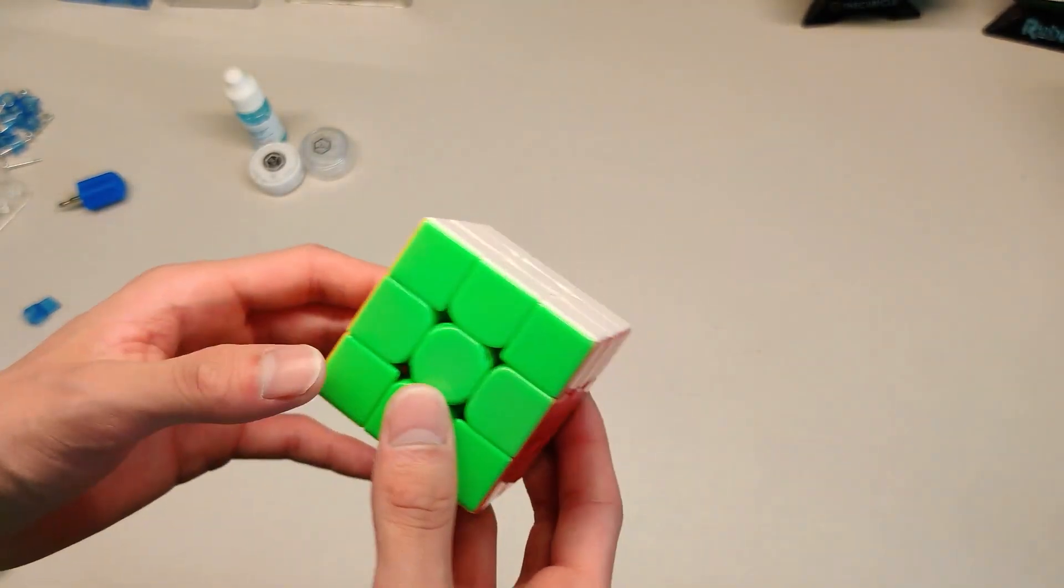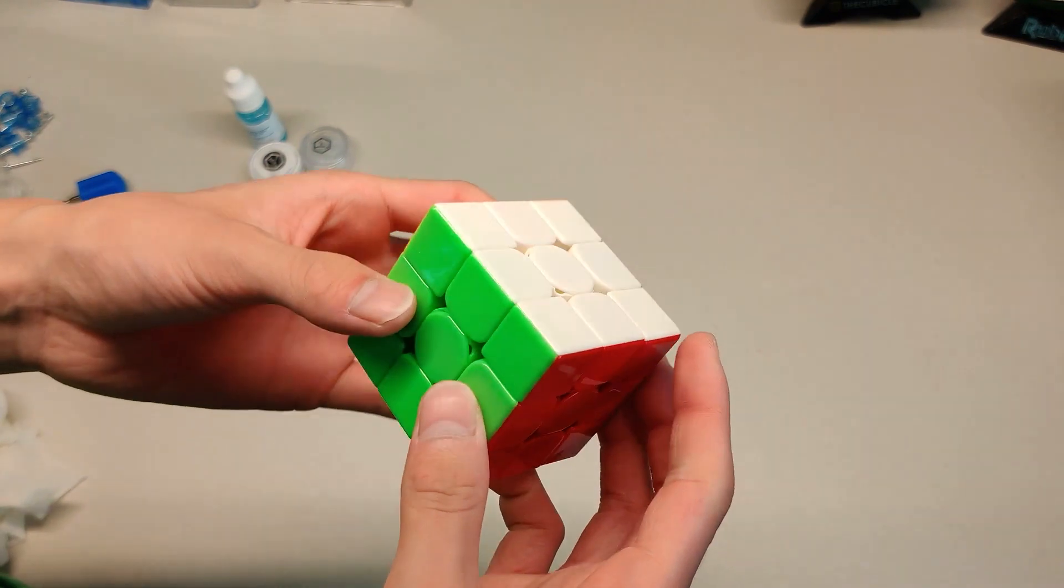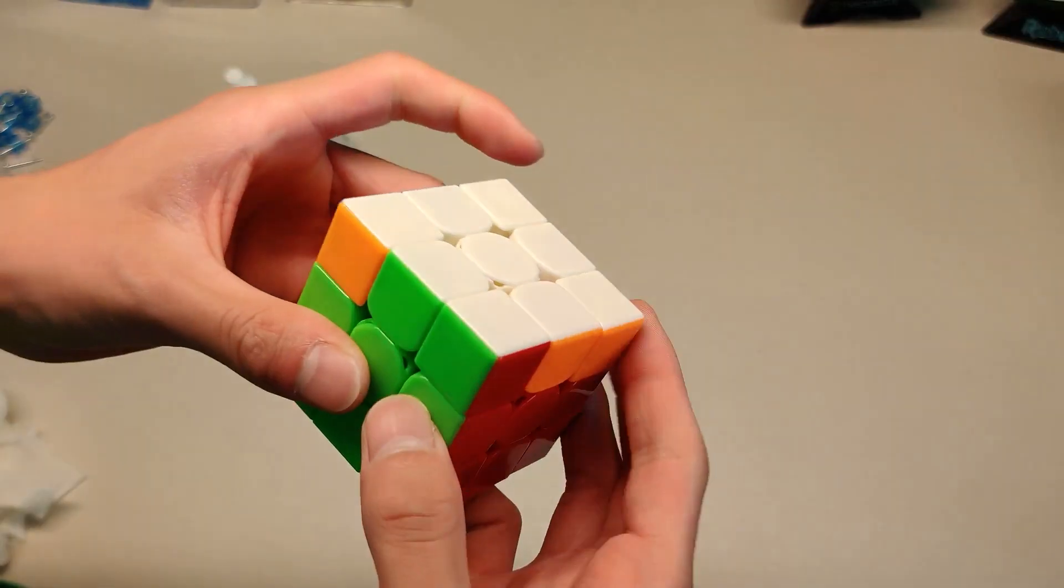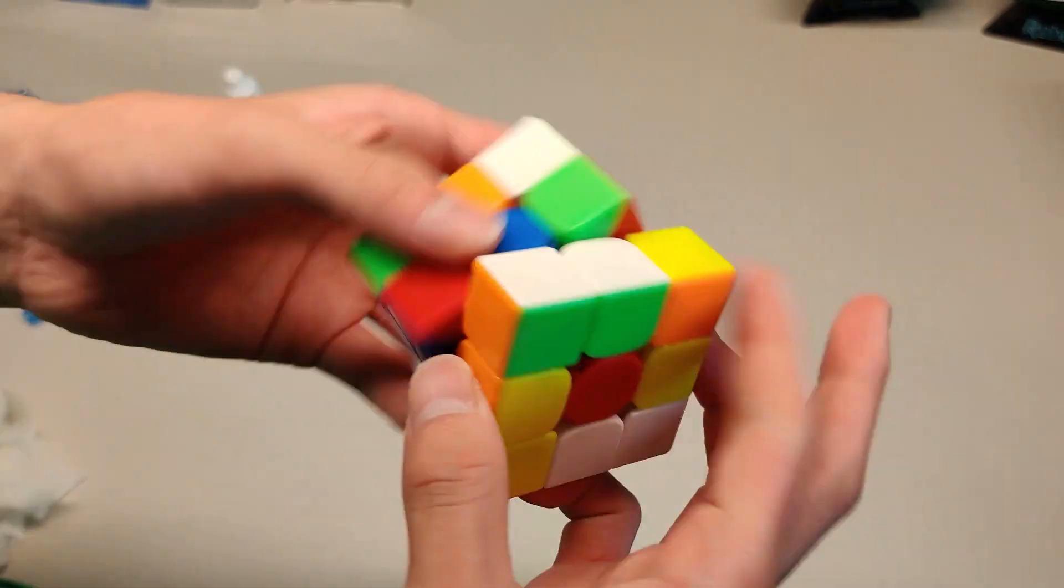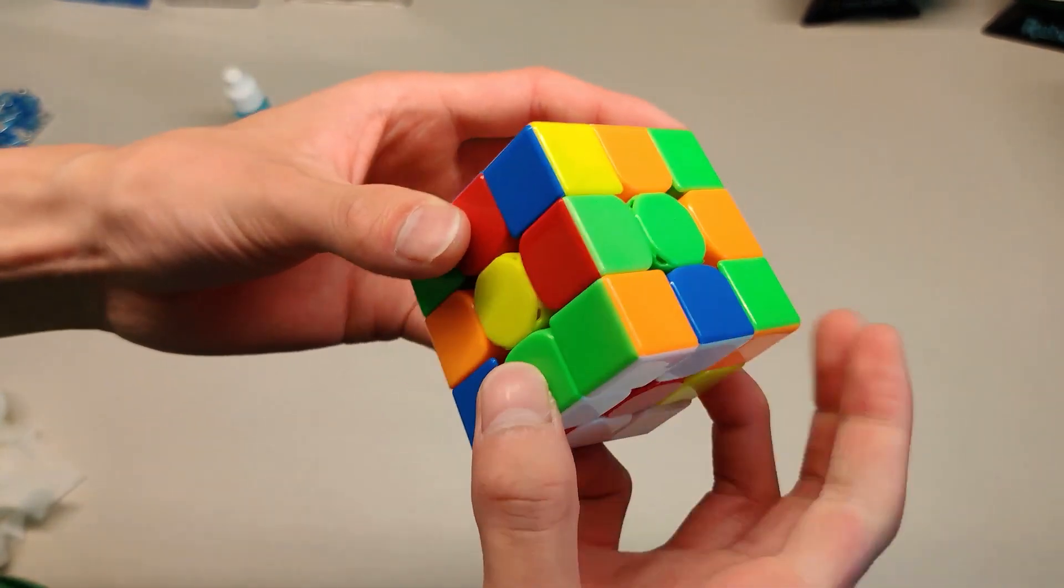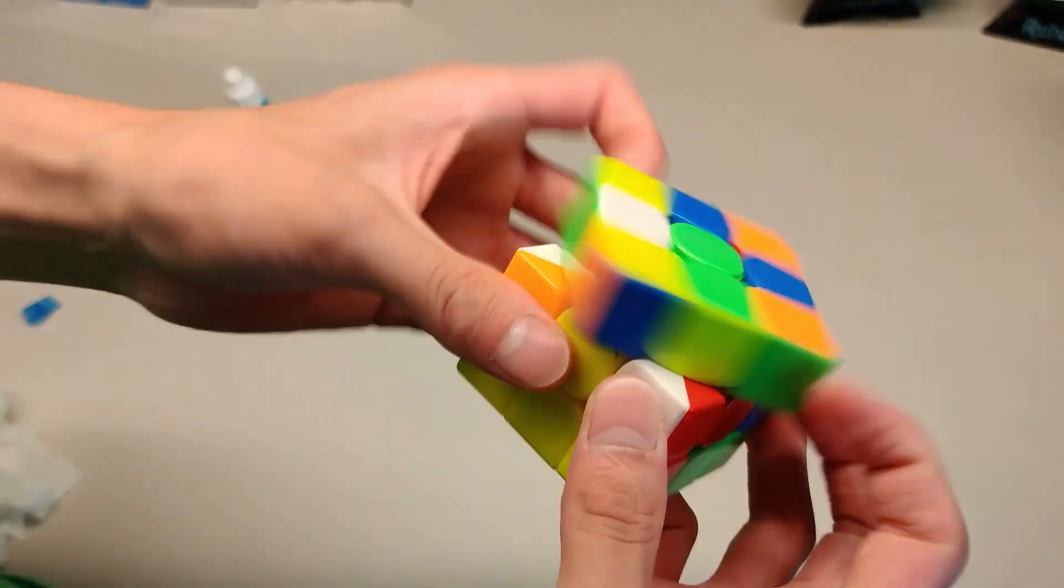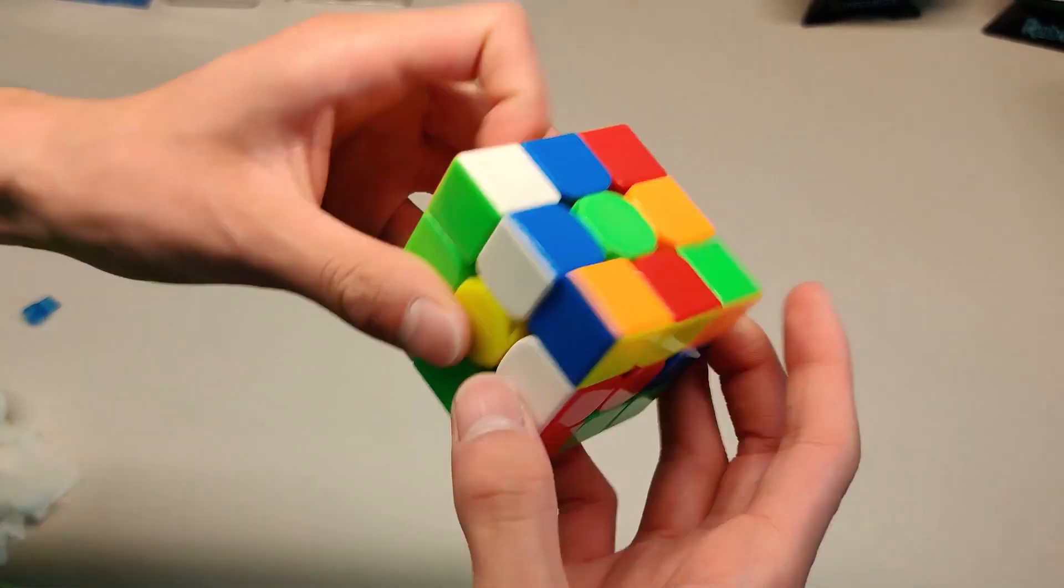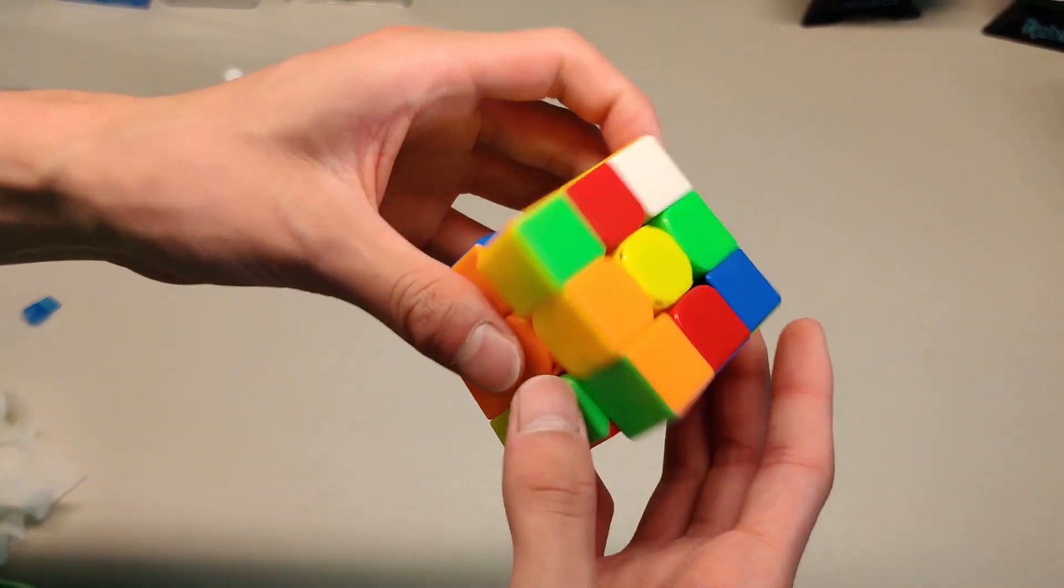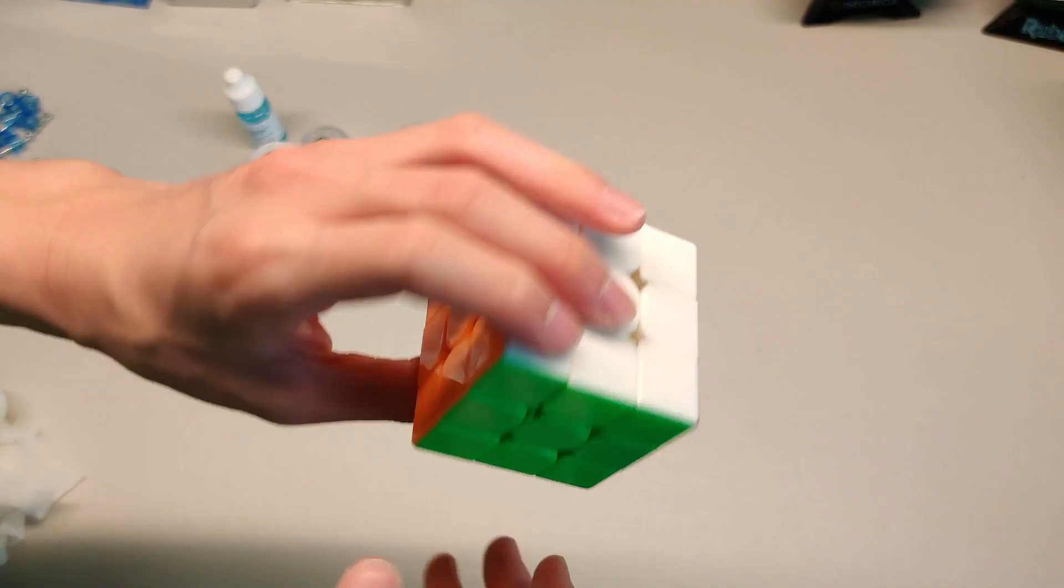And there we go, the cube itself is done. We have the maglev upgrades and stronger magnets. So let's just see how the cube feels. Definitely faster. And the magnets do feel stronger, so it's kind of balanced out. I think it's a little bit too tight right now because I keep catching on stuff. That corner cutting is not as good.